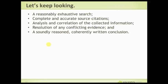The idea is you always need to do a reasonably exhaustive search — find every document that will help you find the answer. Get complete and accurate source citations so you can evaluate the actual information and understand who gave it to you. Then pull all the data together, analyze and correlate them, compare them, and resolve conflicting evidence. Why might something be different? Why might something be wrong? Maybe he lied to get into the army, or changed his age to get Social Security or to get married — there can be all sorts of reasons.